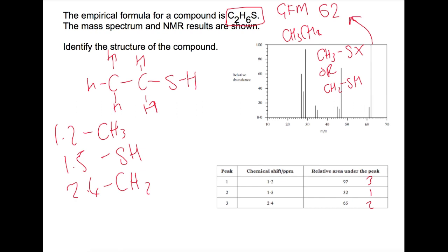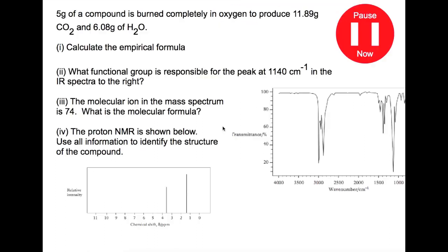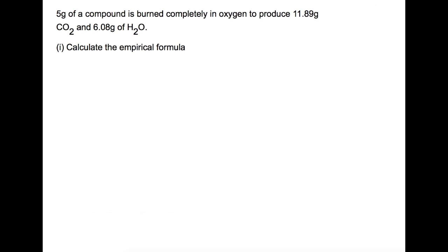I have two examples for you to try so I will bring up the first one, pause the video now and try this example. Let's go through each part of this question together. The first part is asking you to calculate the empirical formula for the compound. You are given the mass of the overall compound and then you are given the mass of carbon dioxide and water which is produced when you burn the compound. This will allow you to calculate the mass of carbon and hydrogen within the compound and also the mass of oxygen.